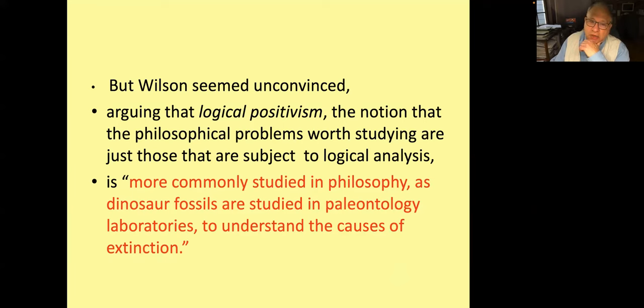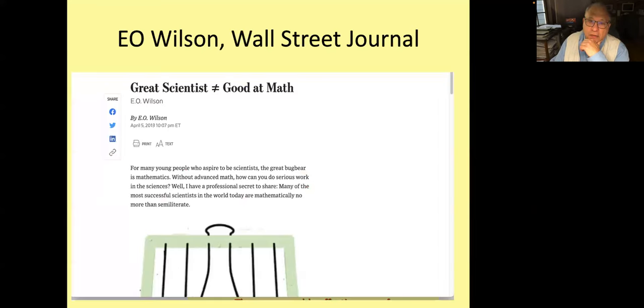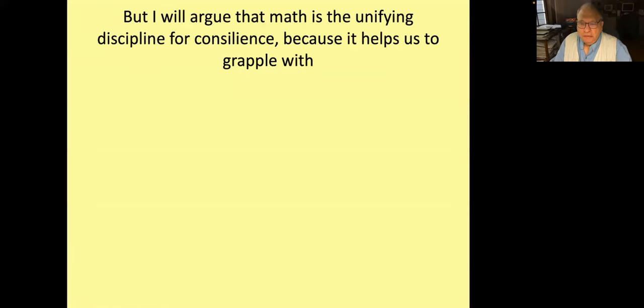And then he wrote a famous essay in the Wall Street Journal, in which he said - just look at the last line - 'I have a secret to share: many of the most successful scientists in the world today are mathematically no more than semi-literate.' Basically, what he said is mathematics is important, but you can always find a mathematician to do that job for you. Well, I'm going to argue against that.